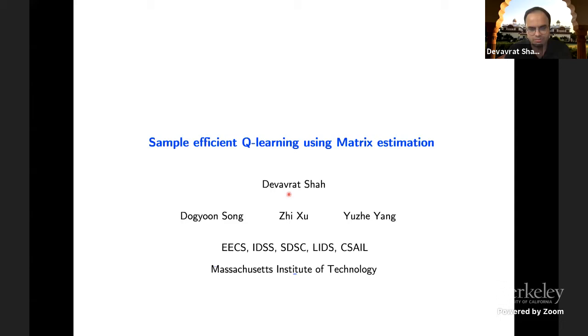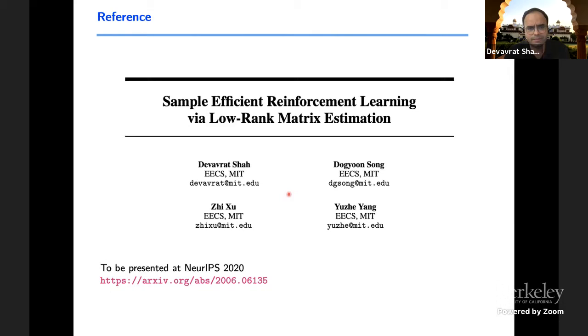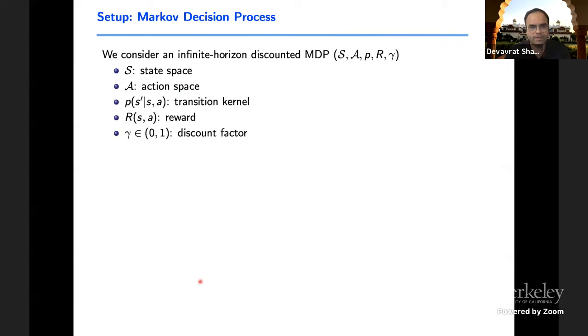So this is based on the manuscript titled Sample Efficient RL with Low Rank Matrix Estimation. It's going to appear in NeurIPS this year, and also it's available on the archive. Just to set things up, we're going to talk about the standard MDP framework. We're going to consider infinite horizon discounted setting.